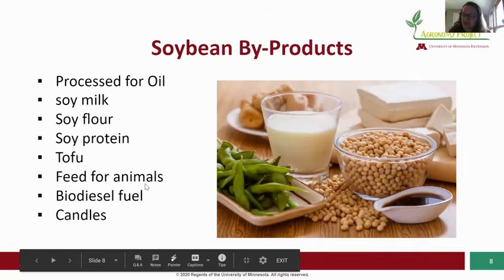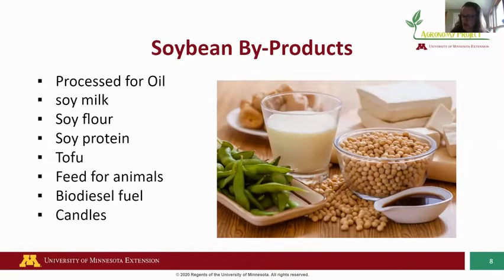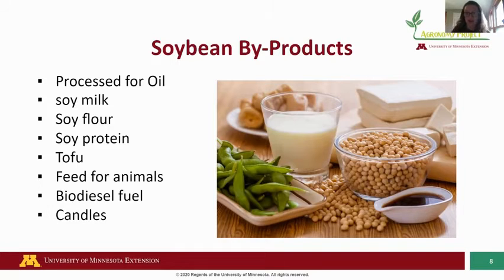The next product is soybeans. Many find it difficult to name soybean byproducts, but there are numerous products we eat and use made from soybeans. Those include different cooking oils, soy milk and protein, as well as tofu. Tofu is used as a meat replacement for many vegetarians and vegans, providing the protein that equals out the meat. Other major soybean products include animal feed, biodiesel fuel for diesel trucks, and candles — a lot of candle wax contains soybeans.